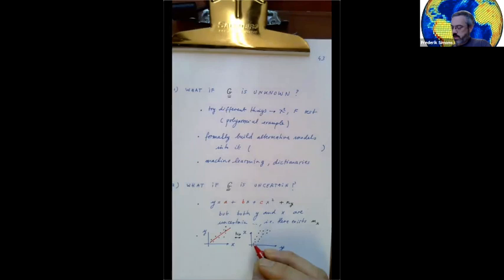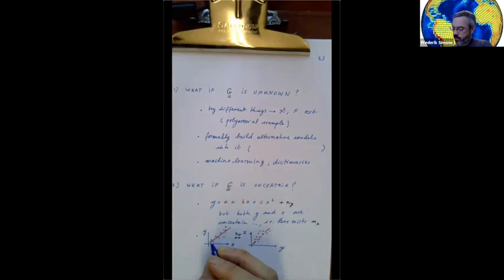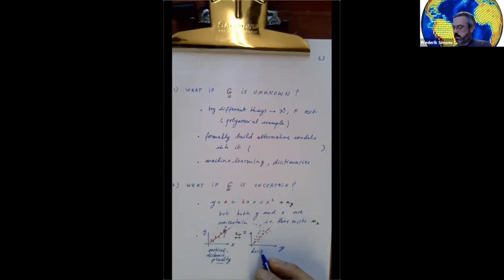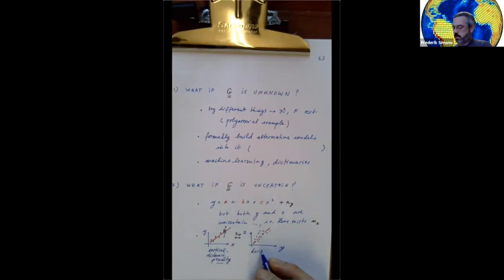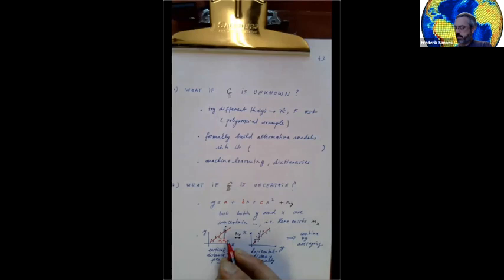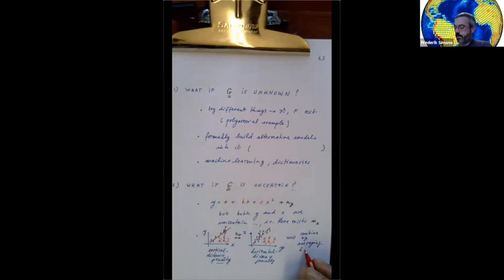I have a noisy dataset y of x. If I regress using the standard G^T G inverse G^T, I get one line. Regressing x on y gives a different line. The first penalizes vertical distance — that's the cost function, the misfit — and the second is essentially the horizontal distance penalty. Then combine and average. I'm not claiming it's a good method, but you do get one set of coefficients from one regression and another set from the other.